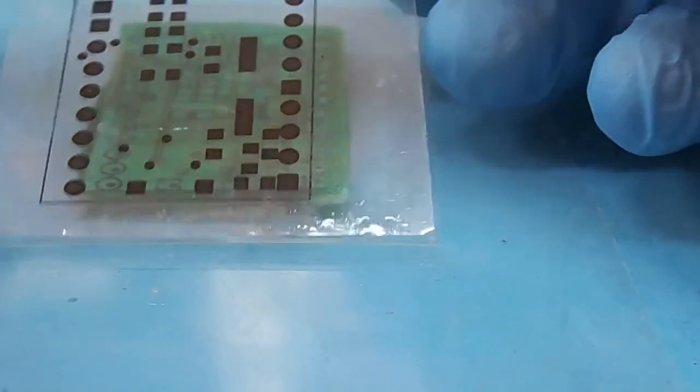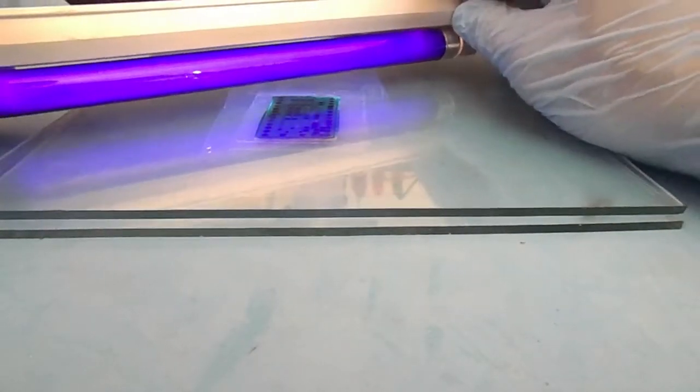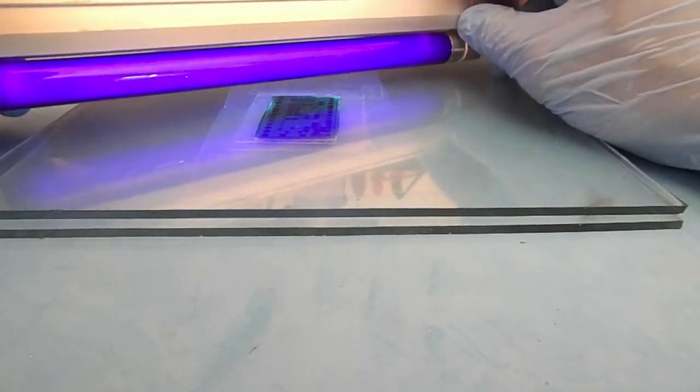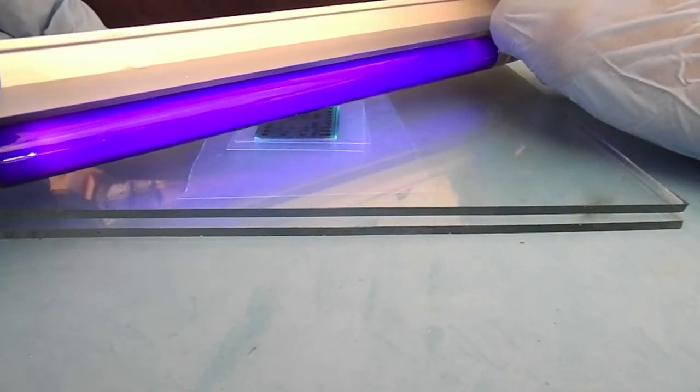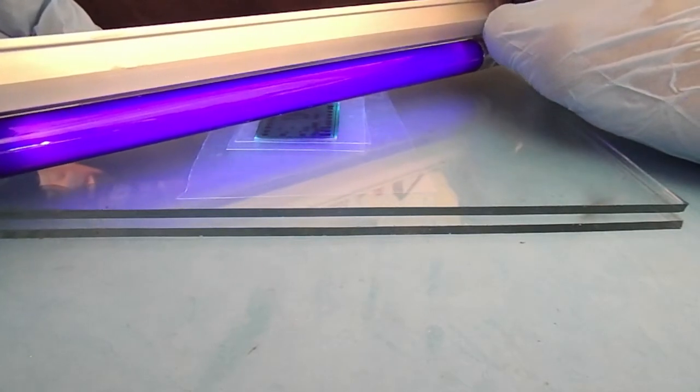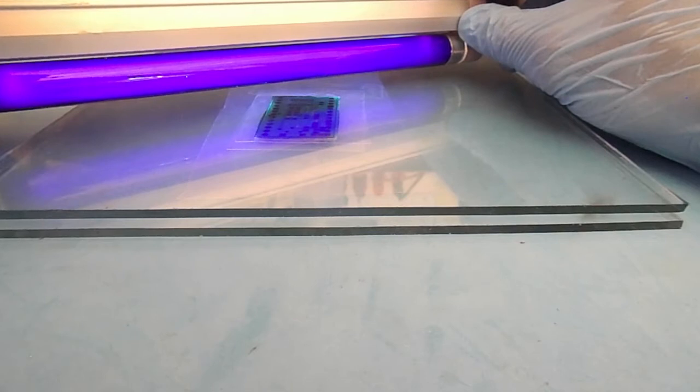Now align your artwork on the top of the PCB. Apply UV light for 10 seconds. And here I would like to tell you that not all of us have the same light source. You need to decide how long your UV light needs to cure the ink.